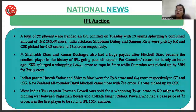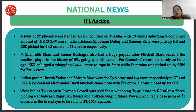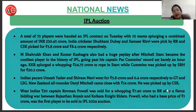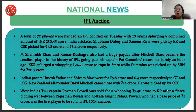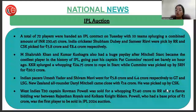At the IPL auction, a total of 72 players were handed IPL contracts with 10 teams spending a combined amount of around 230 crore rupees. Indian cricketers Shams ul Haq and Sameer Rizvi were picked by Rajasthan Royals and CSK for 5.8 crore and 8.4 crore respectively. Umran Malik and Shaums Mavi were picked for 6.4 crore each by GT and LSG. New Zealand all-rounder Daryl Mitchell came close to 14 crore and was picked by CSK.